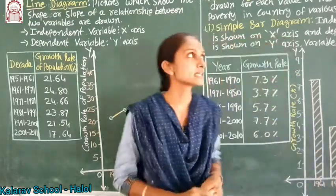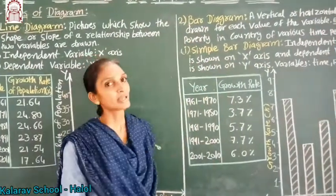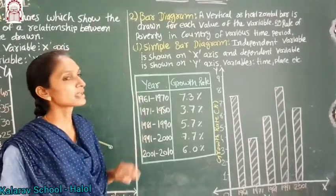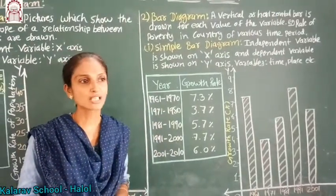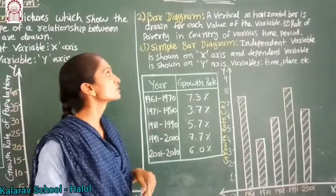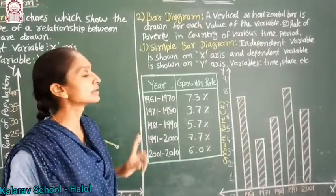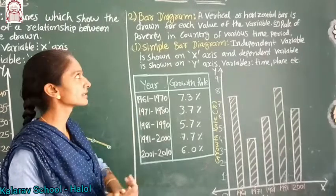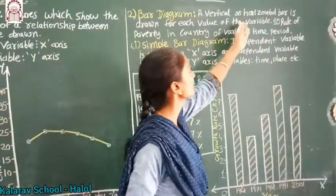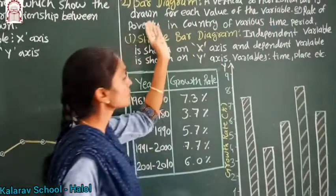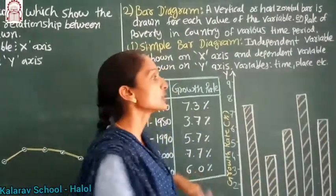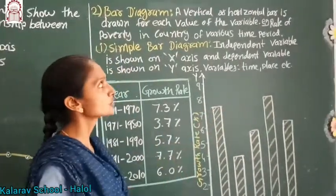Now the second type is a bar diagram. There are three types of bar diagrams: simple bar diagrams, cluster bar diagrams, and dividend bar diagrams. Here we will look at only one type — the simple bar diagram. A bar diagram can have vertical or horizontal bars. Here we will see a vertical bar diagram, though horizontal bars can also be used.